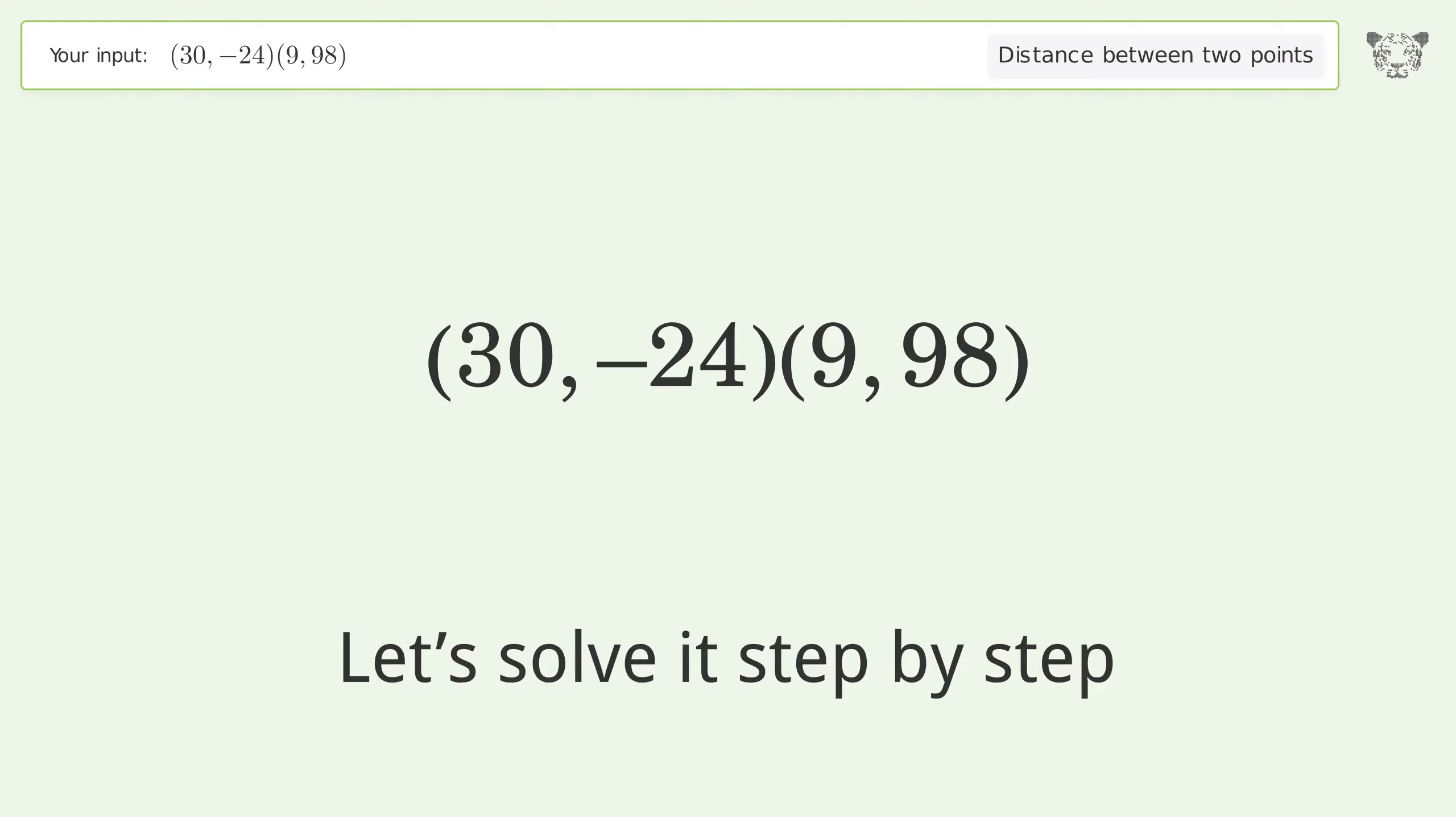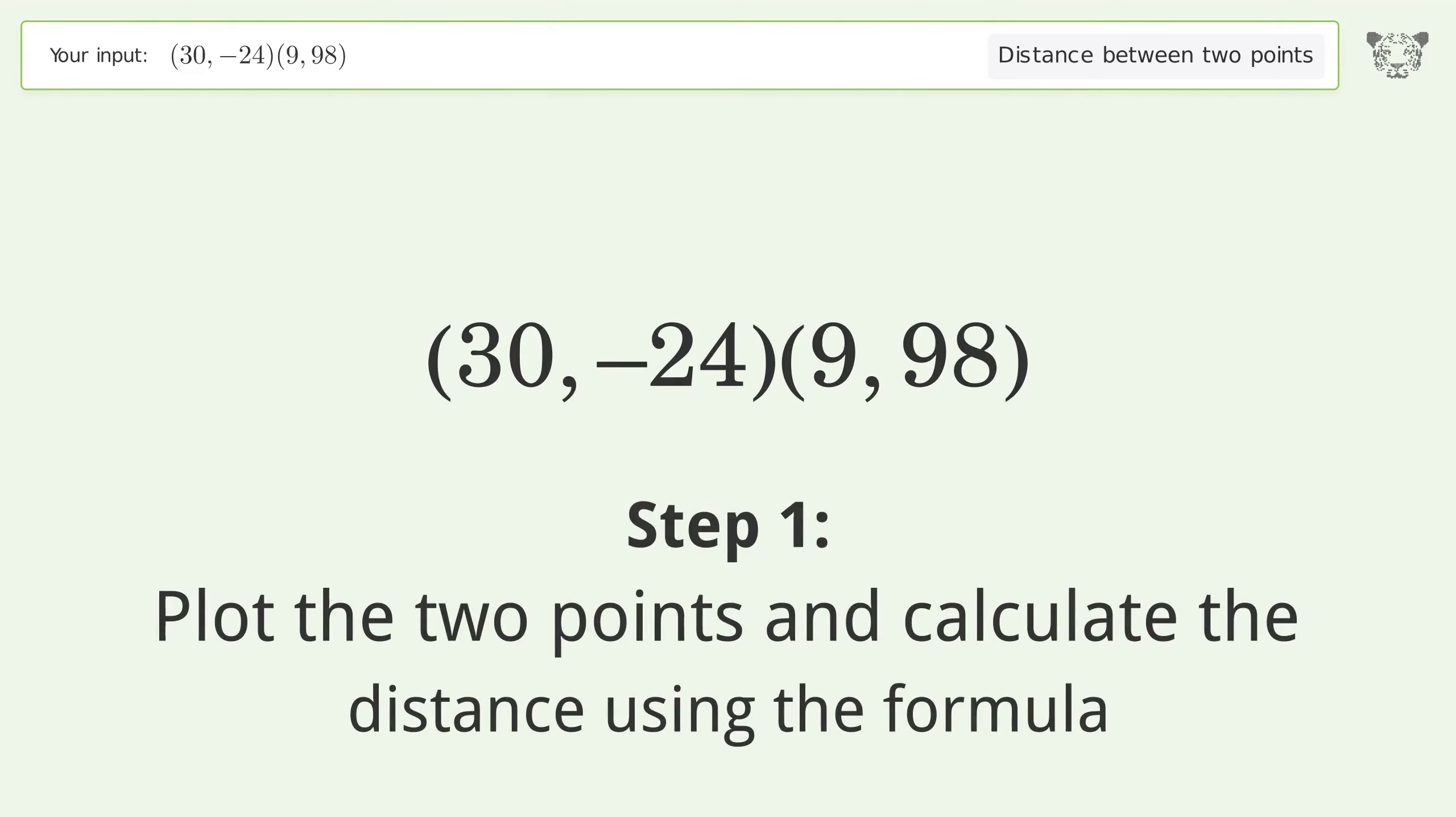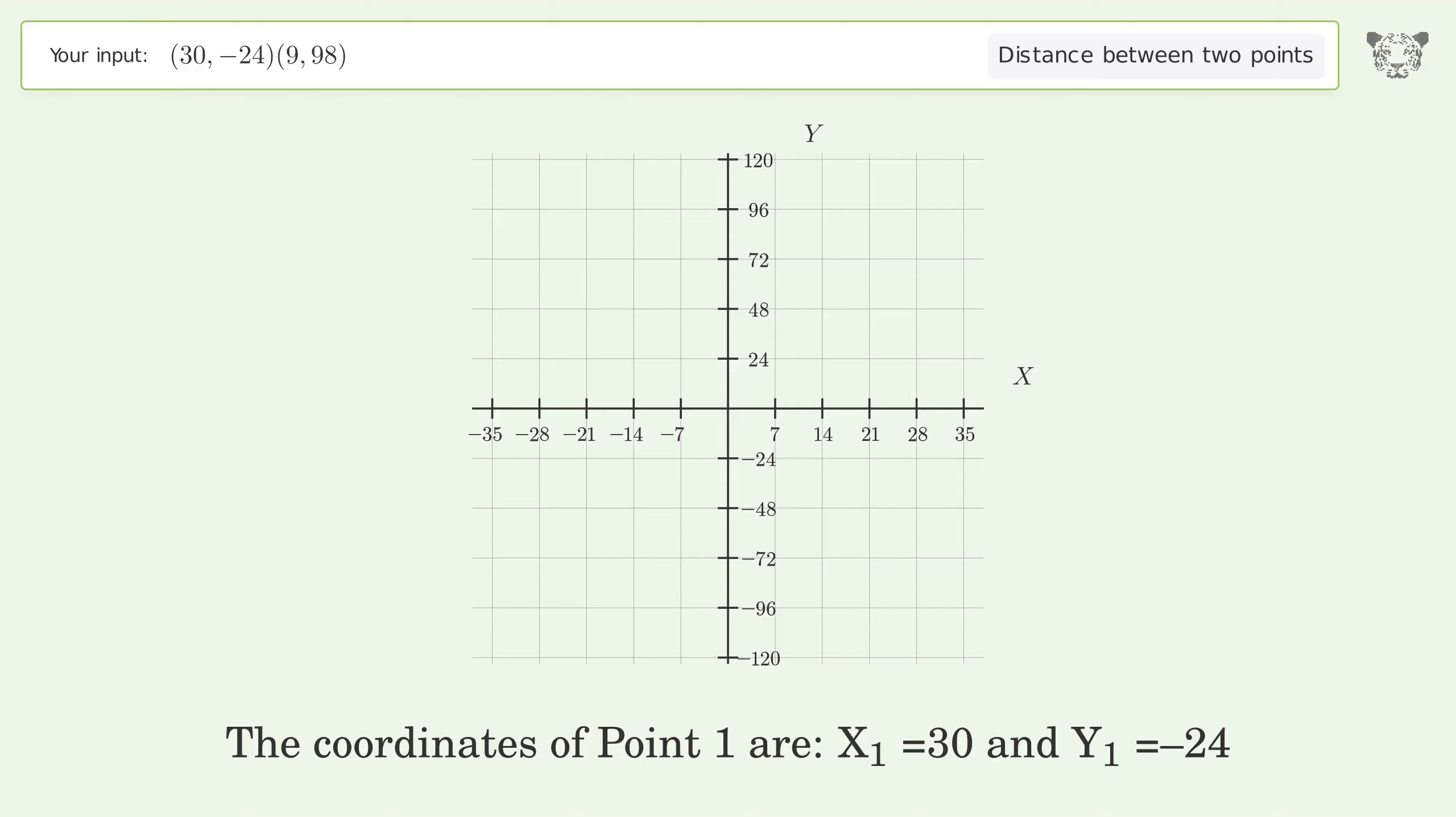Let's solve it step by step. Plot the two points and calculate the distance using the formula. The coordinates of Point 1 are x₁ equals 30 and y₁ equals negative 24. The coordinates of Point 2 are x₂ equals 9 and y₂ equals 98.